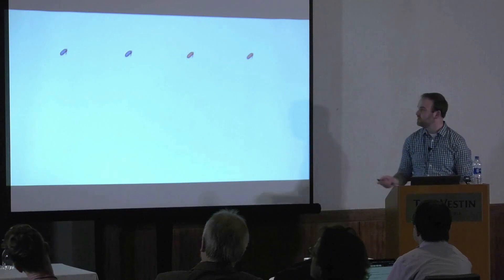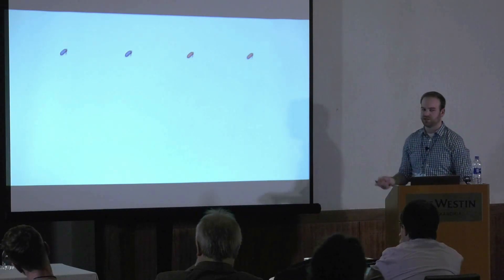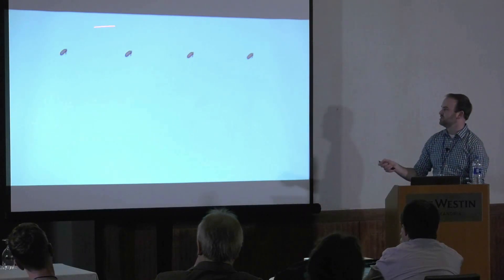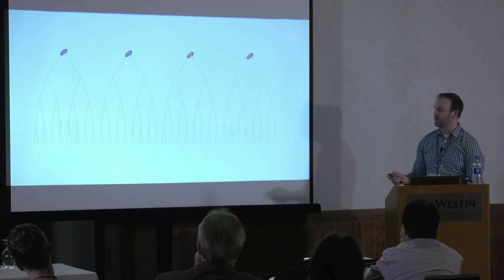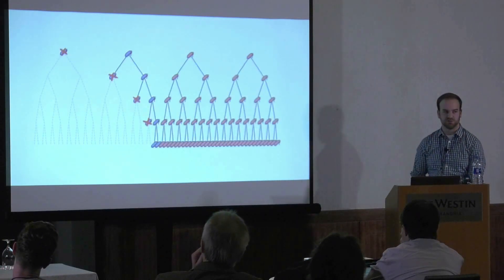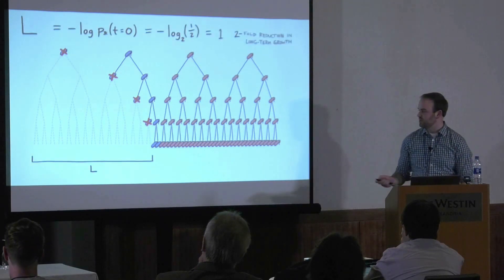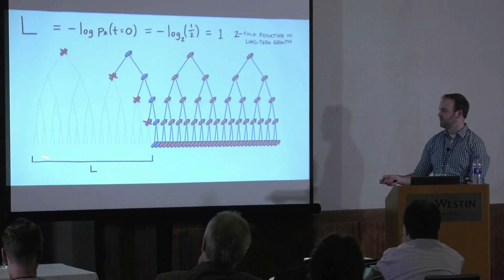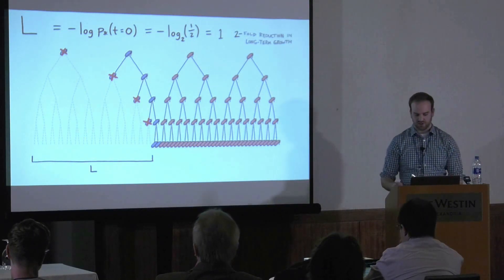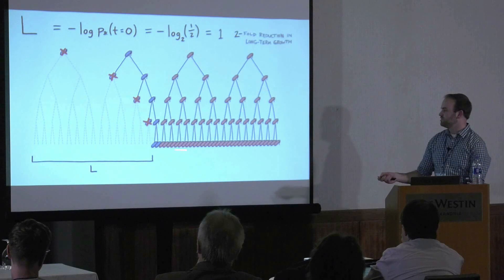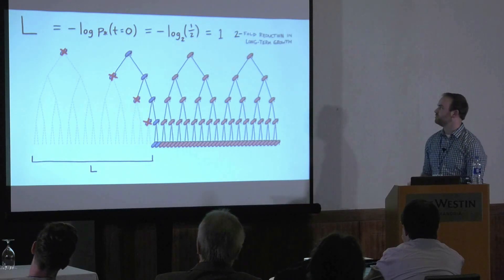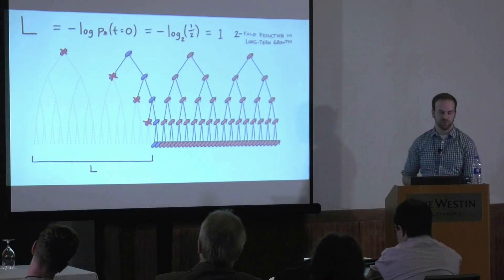Here's an illustration to drive home the concept of load. Imagine two types of bacteria: a blue type sensitive to a drug and a red type that is resistant. If the population were initially totally resistant, it might grow along one trajectory. But if the population has to go through selection to learn that the red type is best, we see some mortality of the blue type and a slower growth trajectory. Substitutional load measures the fraction of potential population growth not realized because selection was acting — in this case, approaching a one two-fold reduction in long-term growth, representing missing half of the potential growth.